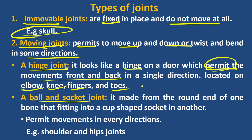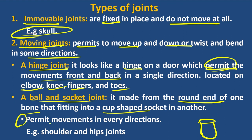If you have a moving joint, it is the ball-and-socket joint. It is made from a round end of one bone fitting into a cup-shaped socket of another bone. This allows movement in many directions. For example, the shoulder joint allows rotation and movement in multiple directions.